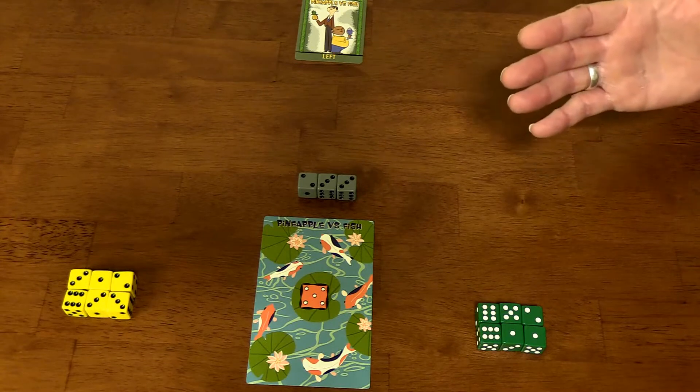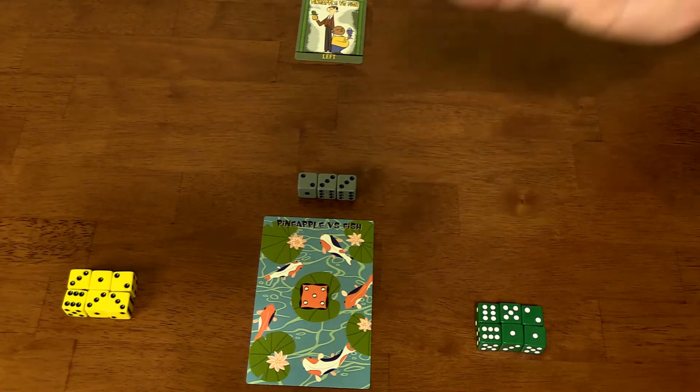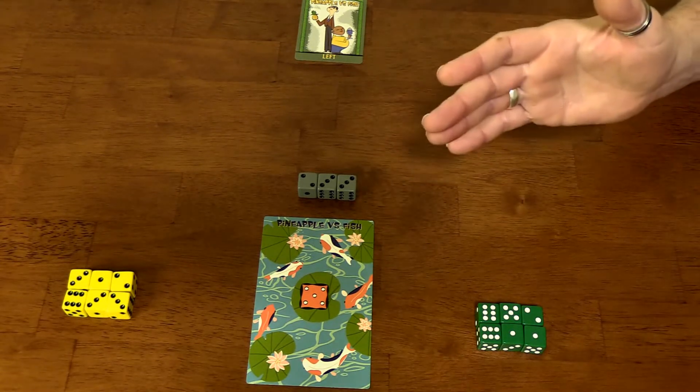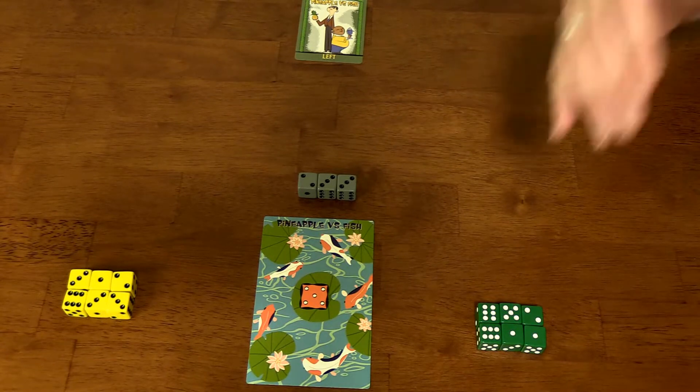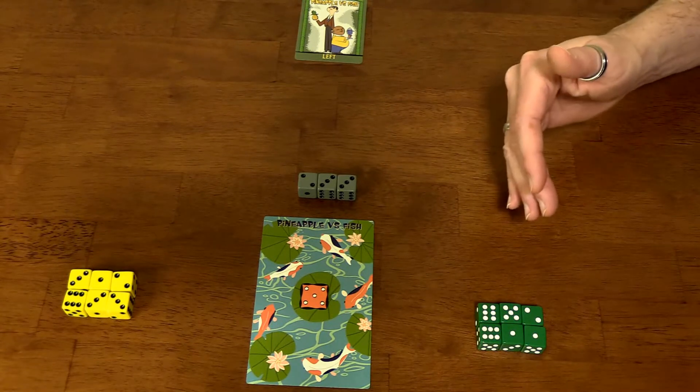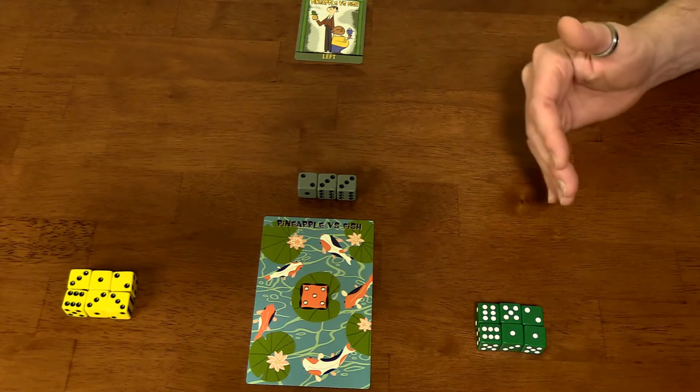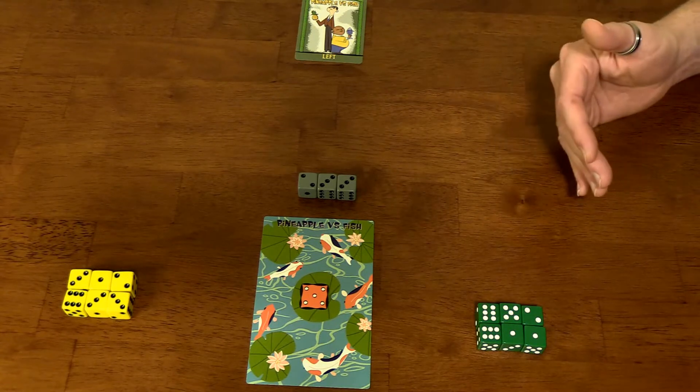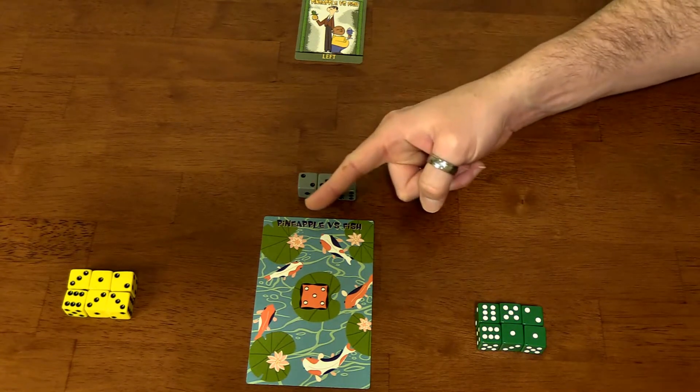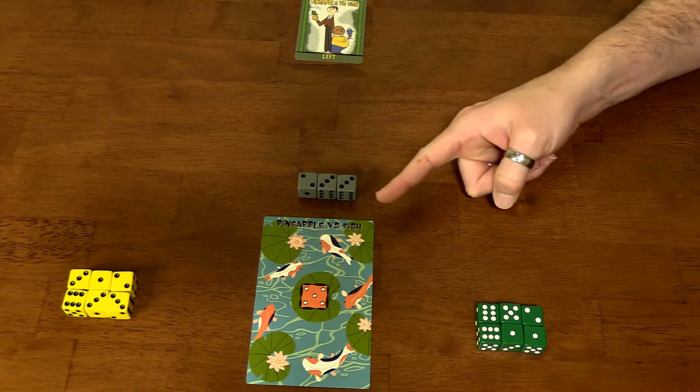The goal of this duel is to either build an incredibly tall sturdy tower or build a wobbly tower that is going to tip over. Which type of tower you are personally building depends on whether you are playing pineapple or you are playing fish.